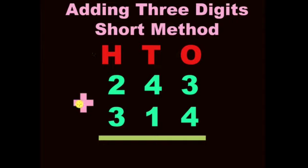Add 243 plus 314. First, you add the ones place. 3 plus 4, 7. 4 plus 1, 5. 2 plus 3, 5.